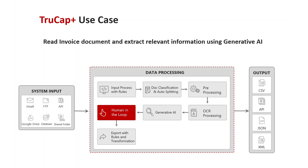Then, TruCat Plus applies its AI ML model in a black box environment and performs document pre-processing to generate higher quality images. It helps the template-free IDP solution to extract the data with high accuracy. In addition, TruCat Plus seamlessly integrates with generative AI to extract important information.